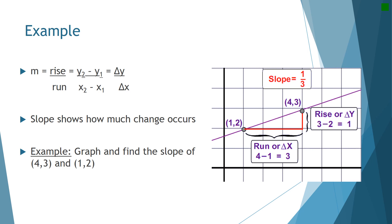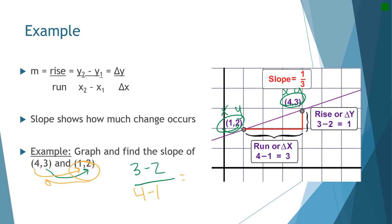Here's an example of calculating slope. We have two data points: four comma three and one comma two. Remember, this is your x and y values — you always go x then y. We take the change in y's: three minus two. Then we take the change in x's: four minus one. That gives us one over three. Does it look like a positive slope? Yes, it's going up — so a slope of one over three makes sense. You have to keep going in the same direction for both y and x values to stay consistent.